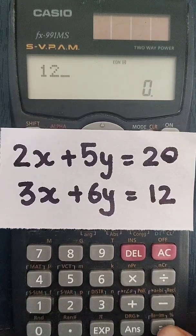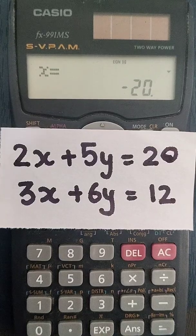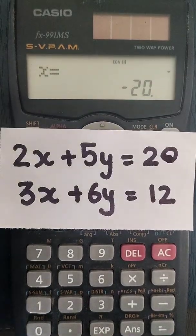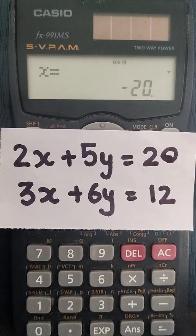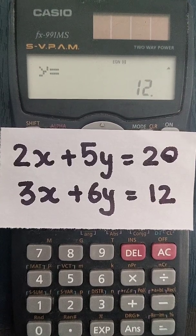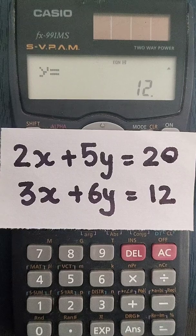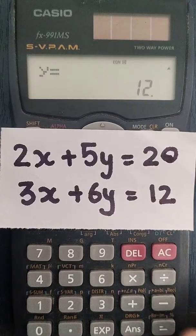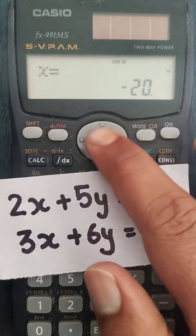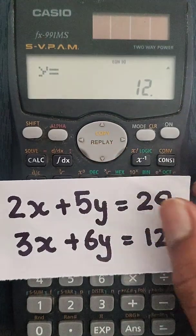And again, pressing equal to sign, the value of x comes out to be minus 20, and value of y comes out to be 12. So this is the solution for this equation, we have the values as minus 20 and 12.